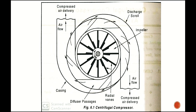First we need to learn about the parts of the centrifugal compressor. It consists of curved radial vanes which are attached to the shaft that rotates. The central part consists of the shaft — this is the eye of the impeller. These are the radial curved vanes attached to the shaft, and this whole unit rotates about its center. The impeller is a disk which is fitted with radial vanes.